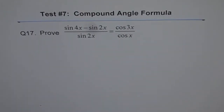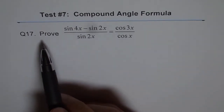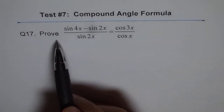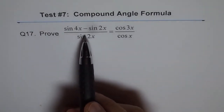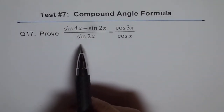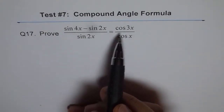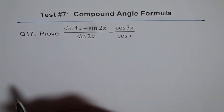Question 17 of test 7 on compound angle formula. It's a practice test, so try to do the question yourself. Copy this down. Prove: sine 4x minus sine 2x, divided by sine 2x, equals 2 cos 3x over cos x.